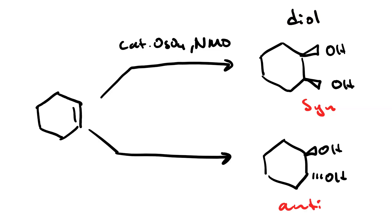Also, to get the anti-diol, we could use a peroxyacid followed by acidic conditions. The peroxyacid makes an epoxide and then the ring is opened under acidic conditions. We could also make the epoxide by going through the halohydrin.